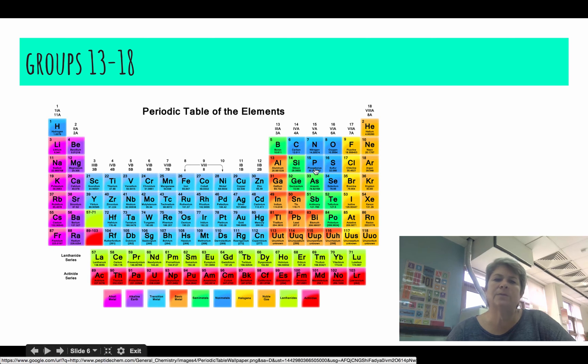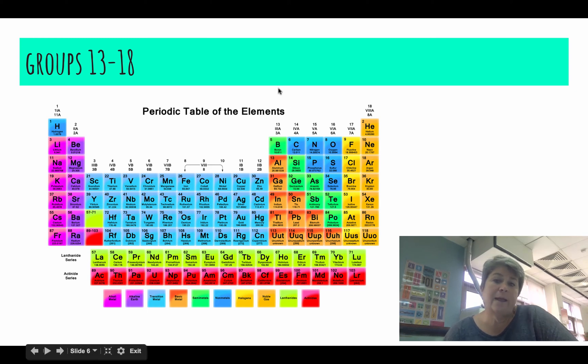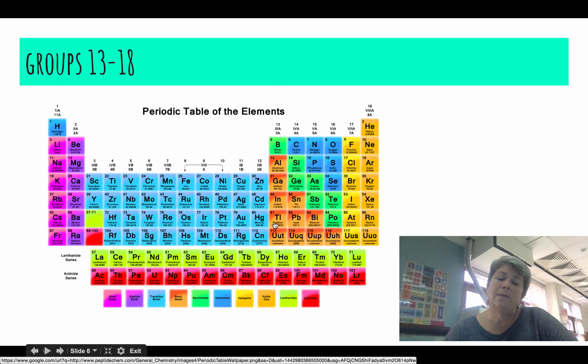And then finally, let's talk about groups thirteen through eighteen. So, group thirteen starts here. Boron is at the top of that group. And it's also called the boron family. Makes sense, right? All of the atoms of these elements have how many valence electrons, do you think?